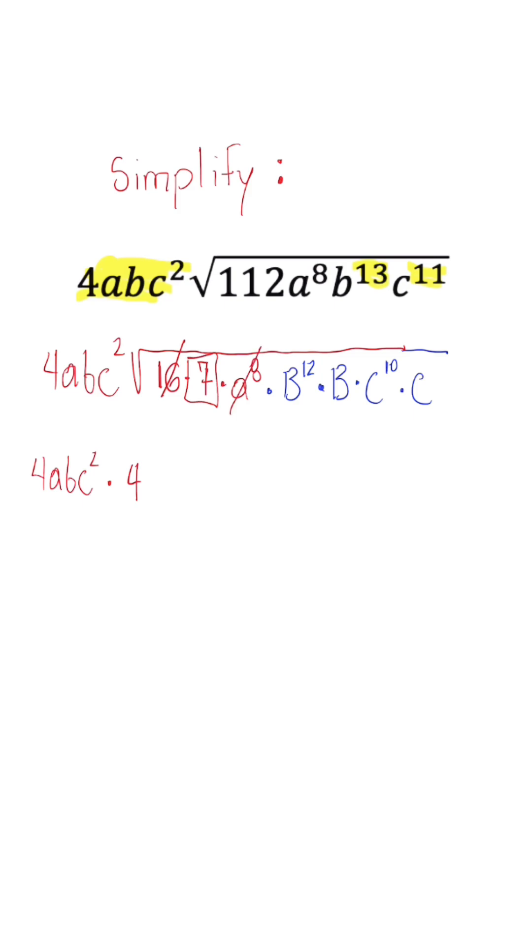a to the 8th simplifies to a to the 4th. b to the 12th simplifies to b to the 6th. This last b stays under. c to the 10th simplifies to c to the 5th. And the last c stays under.